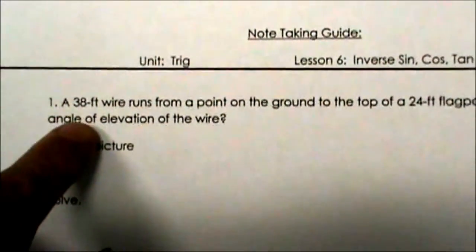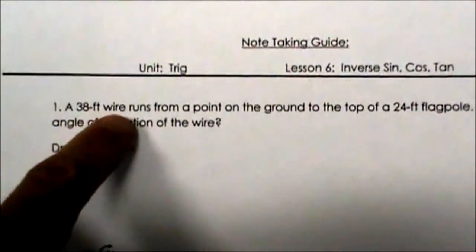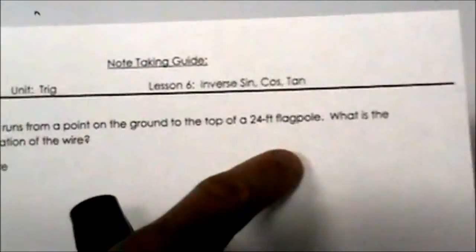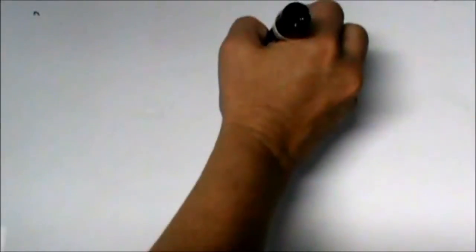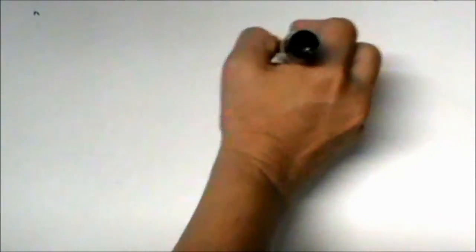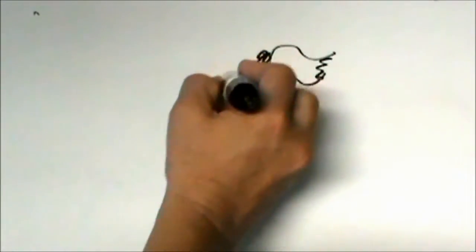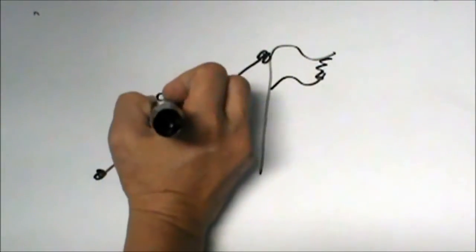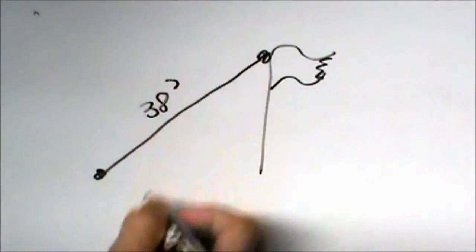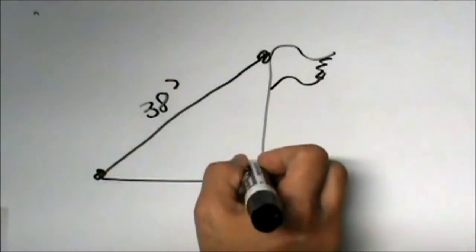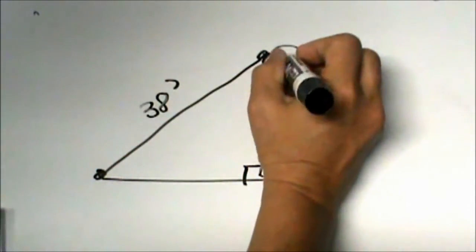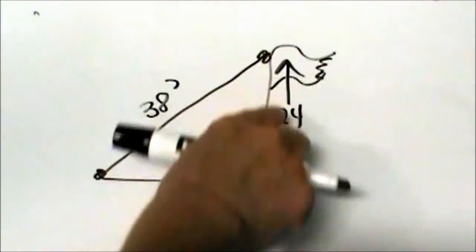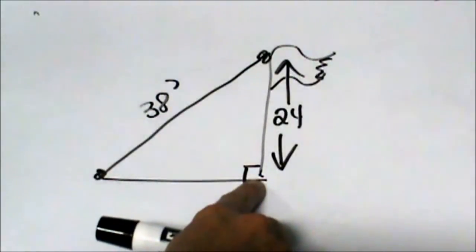So let's try to draw this picture. We have a 38 foot wire that runs from a point on the ground to the top of a flag pole. Let's draw a flag pole. Here is our flag and here is the top of the pole and there is a wire that runs from the ground up. That is a 38 foot wire. And we were told that the pole is 24 feet tall so you want to draw and label your picture. Now the flag is going to make a right angle with the ground so draw your right angle in.